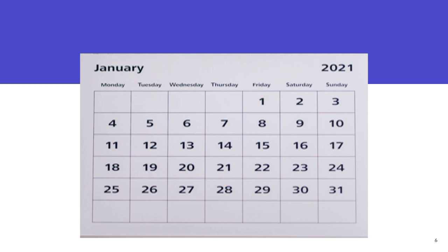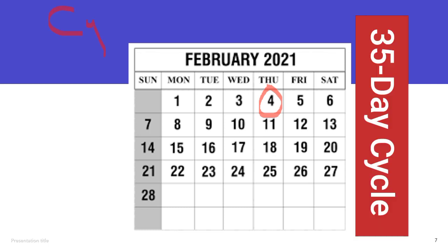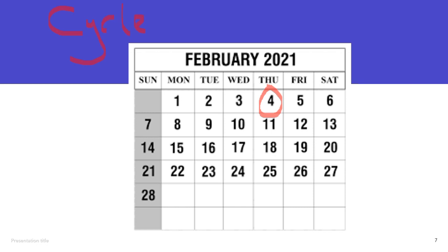Let us now assume that she begins her menses on the 1st of January and did not see anything until the 4th of February. If you count the number of days from the 1st of January to the 4th of February, you must have counted 35 days. So it means that the length of the cycle is 35 days.